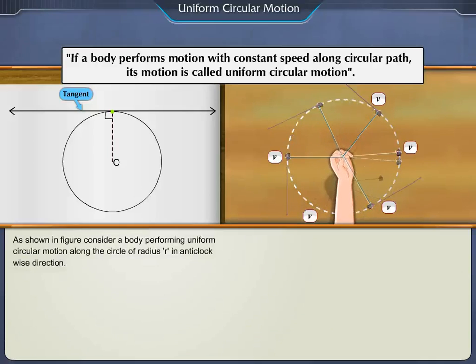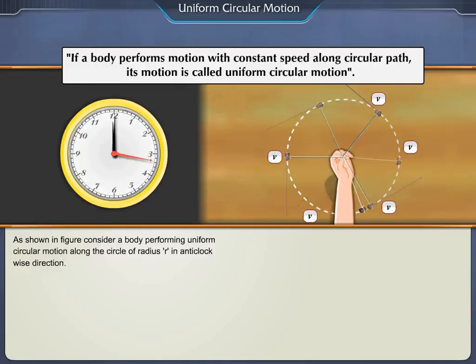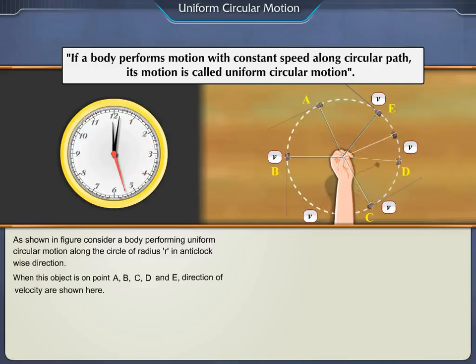As shown in figure, consider a body performing uniform circular motion along the circle of radius R in anticlockwise direction. When this object is on point A, B, C, D and E, direction of velocity are shown here.